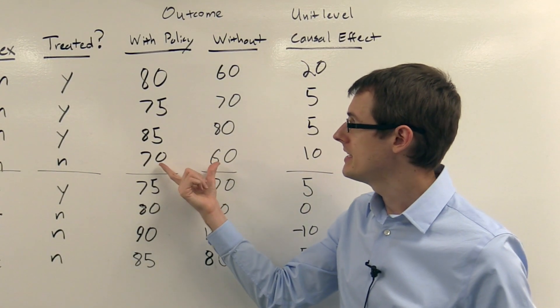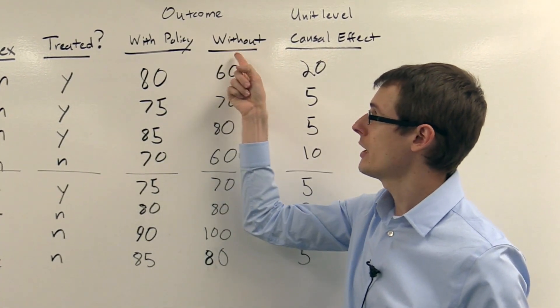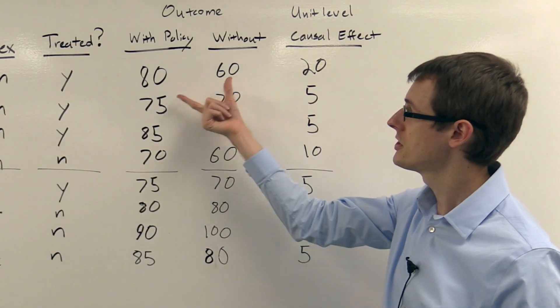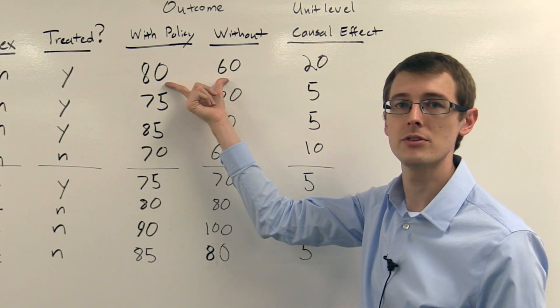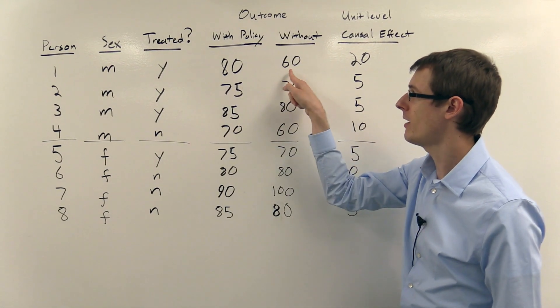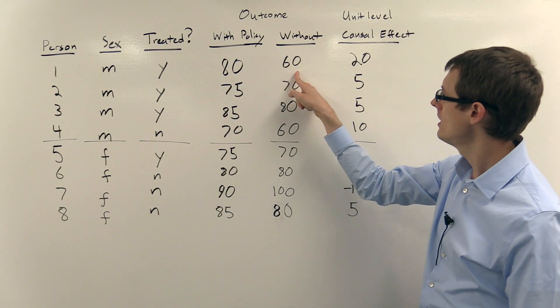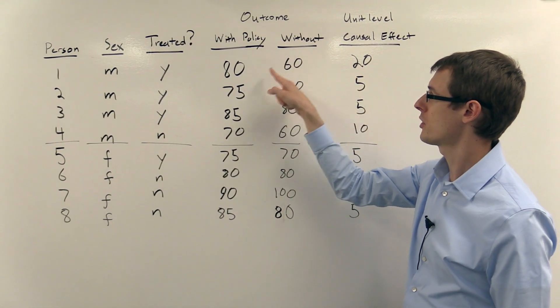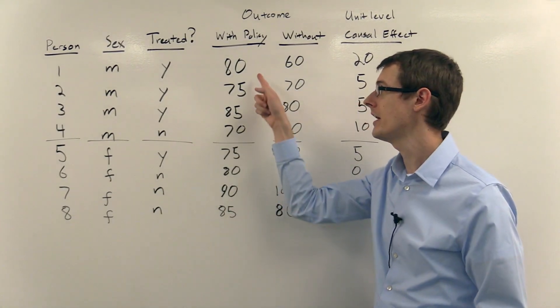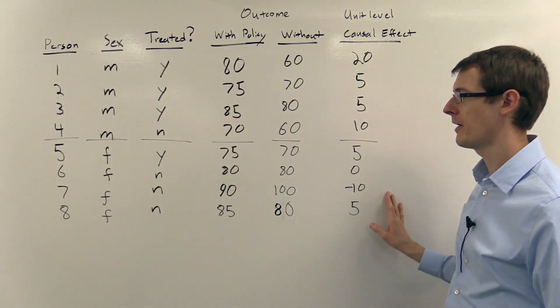Now once I've got these outcomes that you would get with the policy and without, I can compute the unit level causal effect, which is just the difference in these two numbers. So for the first person, the unit level causal effect is 20, 80 minus 60. So this is the effect that the person would get if they went into the policy, a 20 point increase in their outcome, and similarly for everybody else.